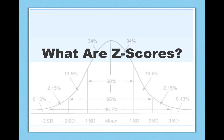Z-scores are unique because, unlike other descriptive statistics like means and standard deviations, z-scores don't describe groups of people. Rather, z-scores describe an individual.